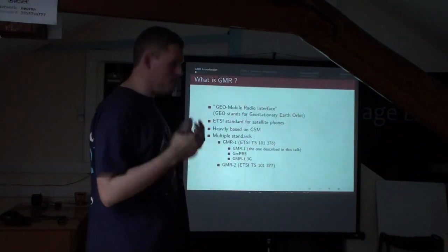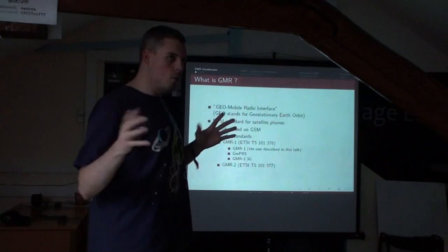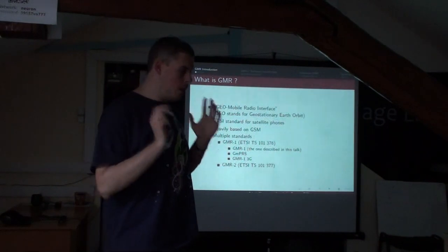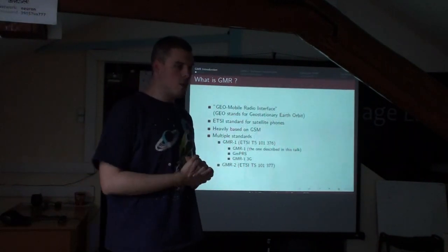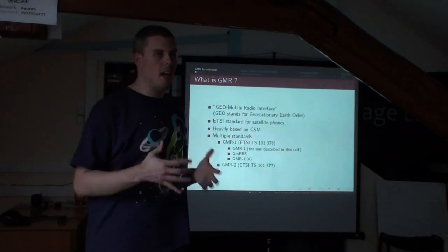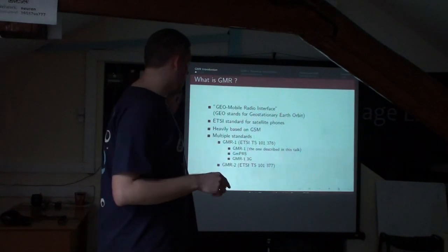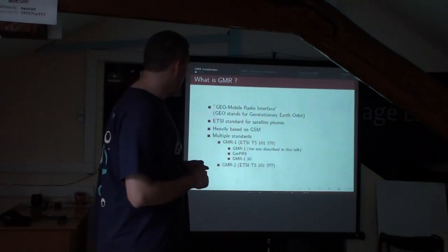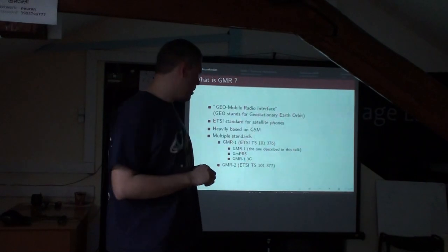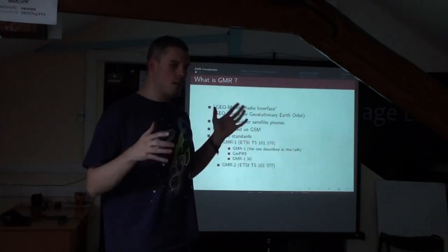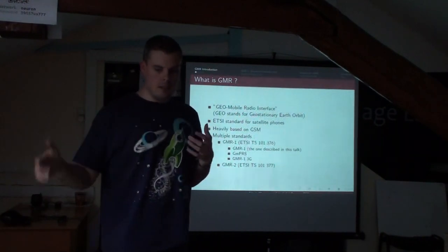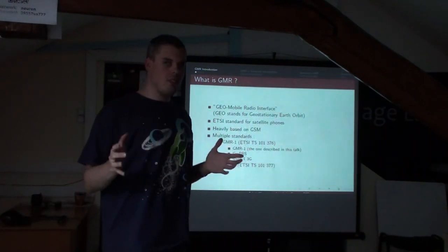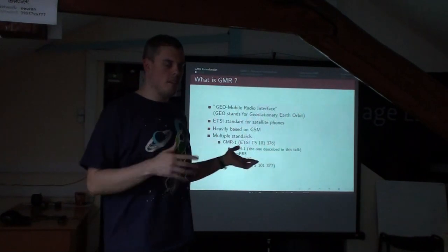GMR1 comes in several revisions. The plain old GMR1 corresponds roughly to GSM 2G — voice calls, SMS, circuit-switched data, but no real internet access. Then they invented GMPRS, which is analogous to GPRS, and then GMR1 3G. That '3G' sounds like cellular 3G but it's quite different — cellular 3G is WCDMA, while GMR1 3G is really an evolution of GMR1, reusing a lot of the same air interface.